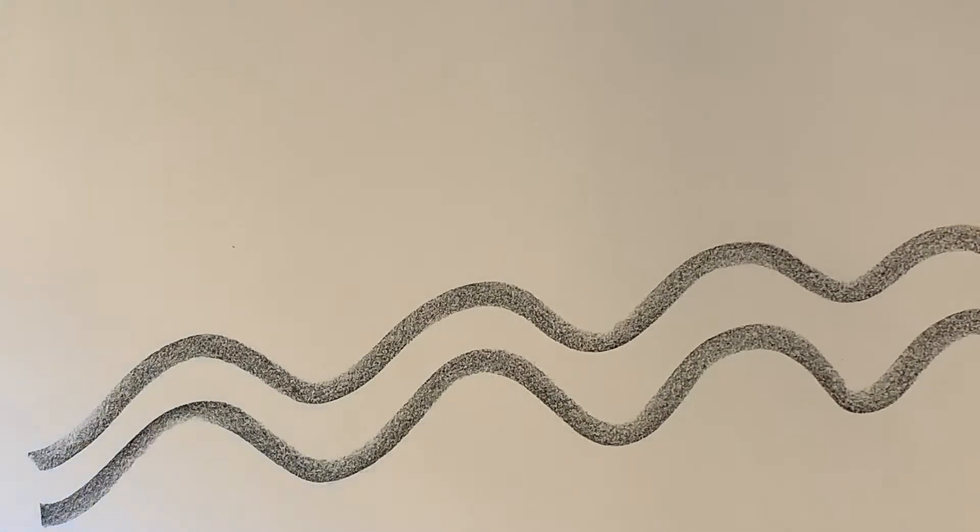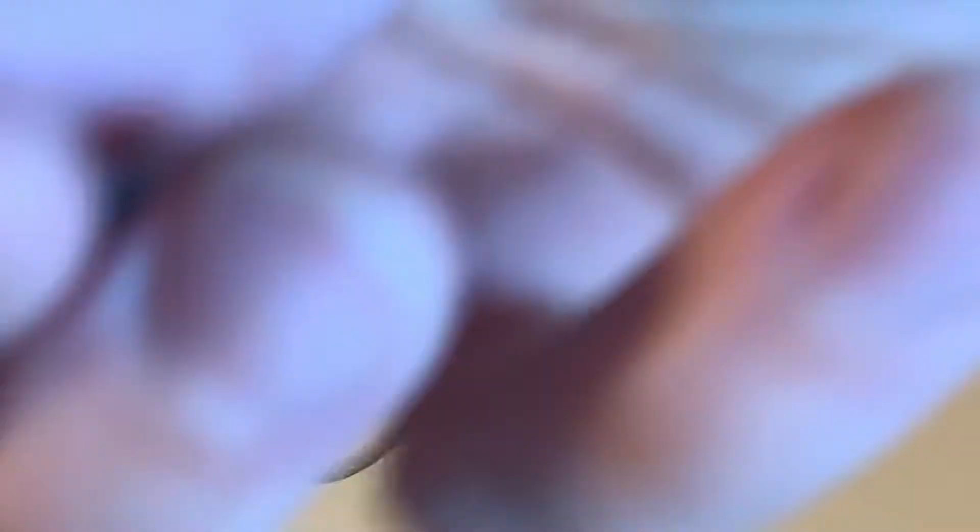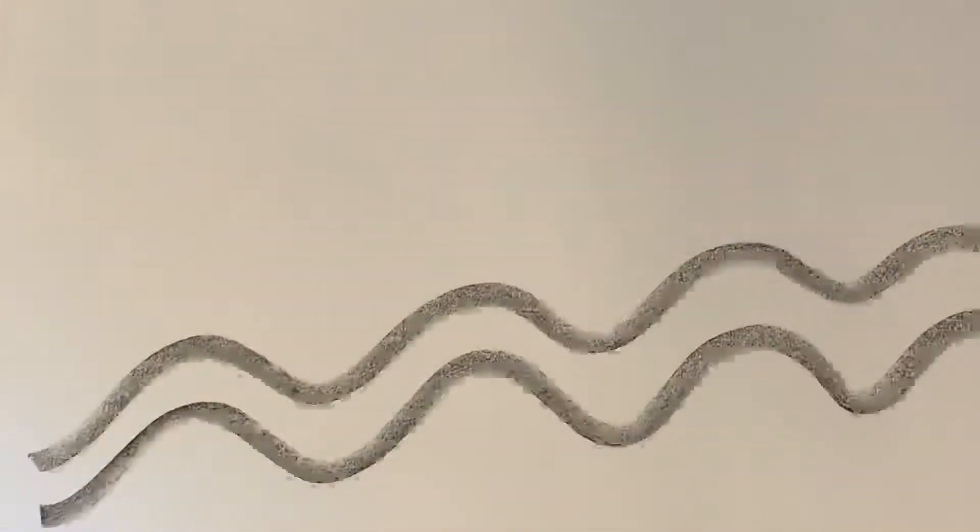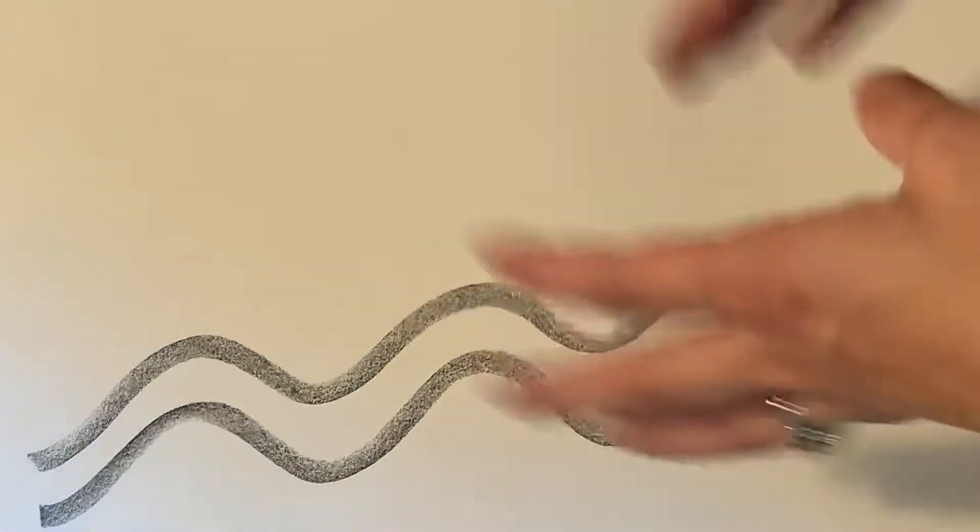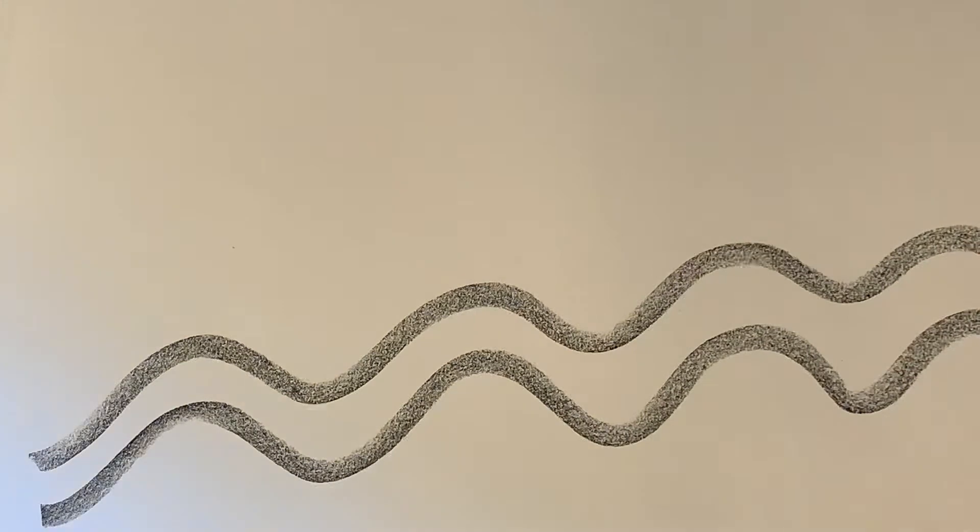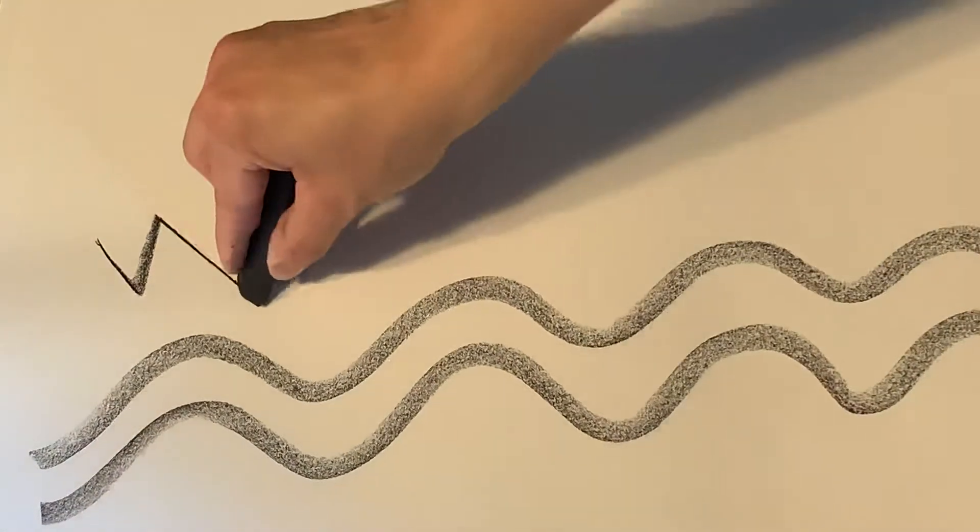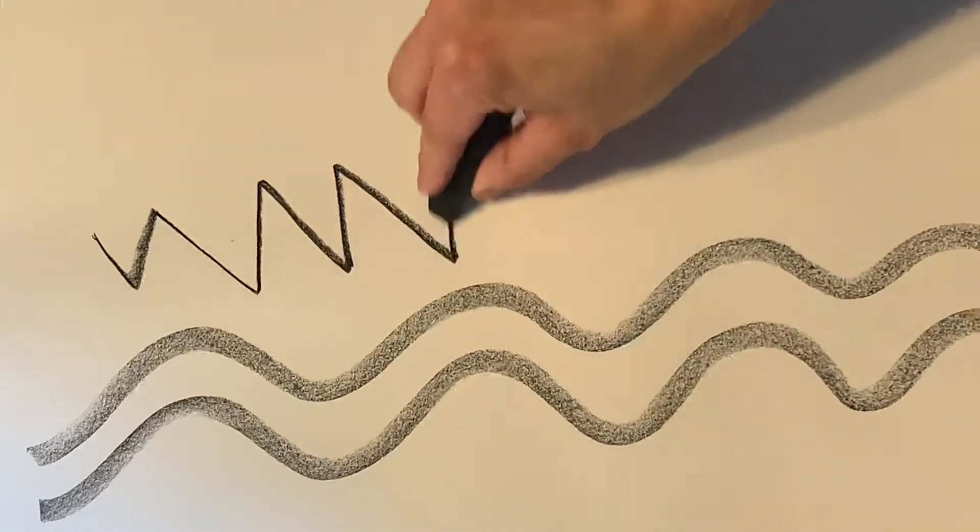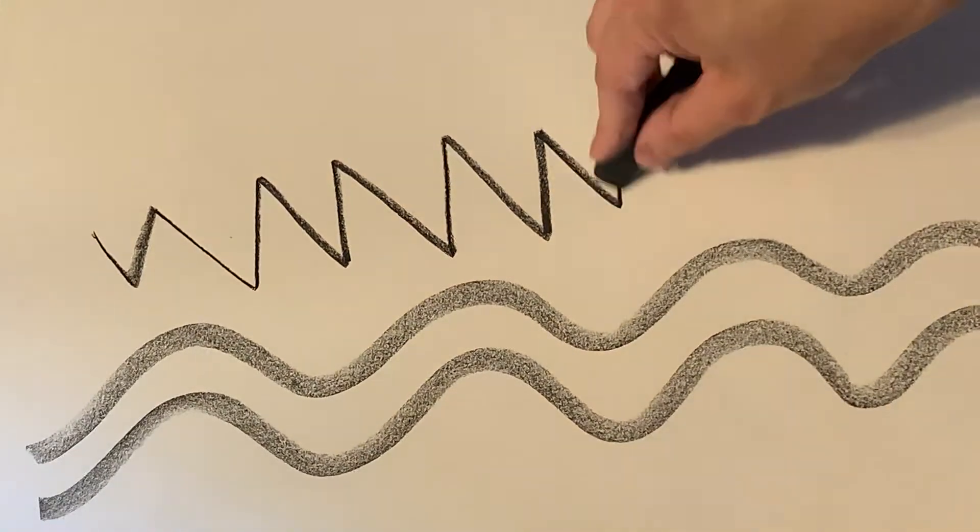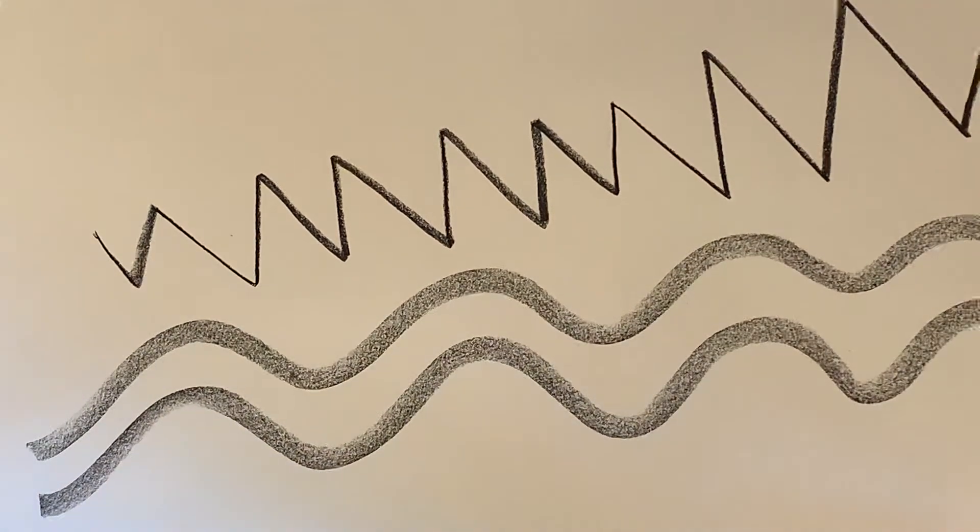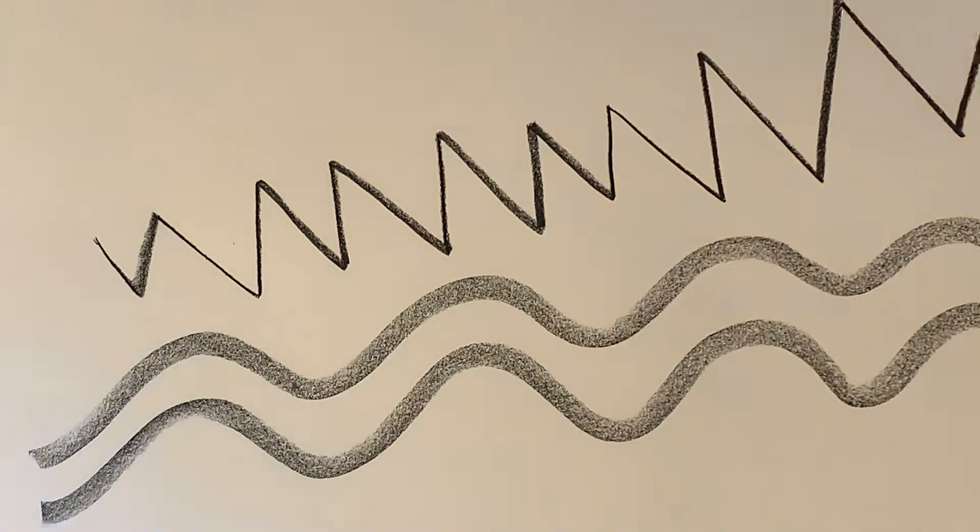In contrast, if I did want to make a really hard-edge line, I would use the corner of the charcoal. Where this is kind of a nice calm line, maybe I want to do an angry line. With the corner of the charcoal, I can make a darker, hard-edged, more angry line.